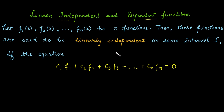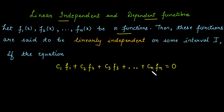Linear independent and dependent functions. Suppose we have n functions f1, f2, up to fn. These functions are called linearly independent if, when we solve the equation c1·f1 + c2·f2 + c3·f3 + ... + cn·fn = 0, this implies that all the constants c1 through cn are zero.